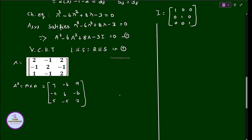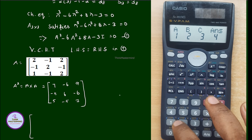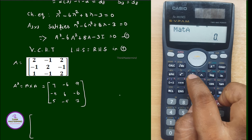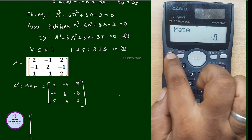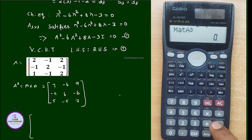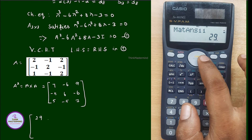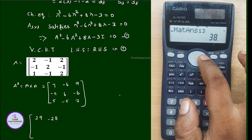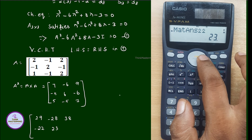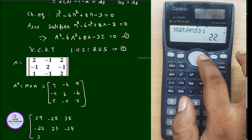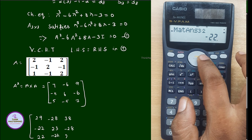Now we calculate A cubed: Shift, Mat, select matrix A, then use Shift X-cubed (the cube button above X-squared). The result displayed for A cubed: first row is 29, minus 28, 38; second row minus 22, 23, minus 28; third row 22, minus 22, 29.